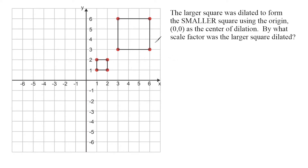We can clearly see that we shrunk down the square. Whenever you shrink something down, the scale factor is going to be less than one, which means we are dealing with some fractional amount because the new shape is a fraction of what it once was. With this example, the easiest strategy is to determine the length of a pair of corresponding sides and then write those lengths as a ratio — that's going to be our scale factor.